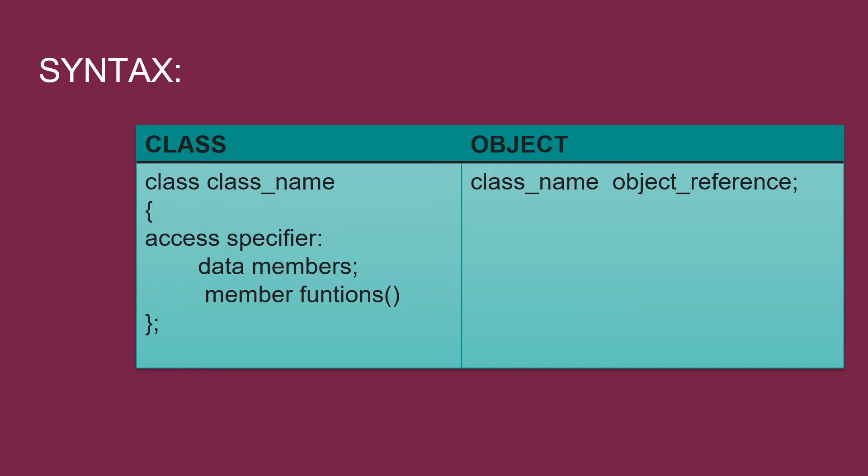This is the syntax for class and object. To declare a class, we will use the keyword class followed by the name of the class. Then, we will have the body of the class which includes the access specifier. By default, the classes are private. Then, we will declare the data members and the member functions in the class. The class will be ended by the semicolon.